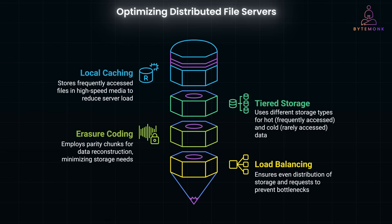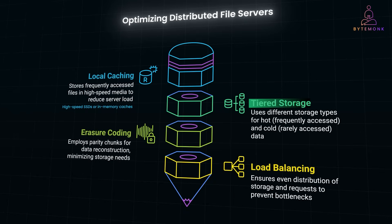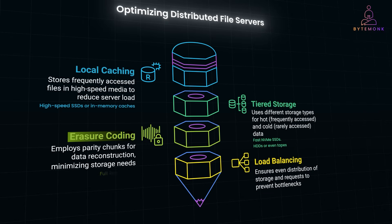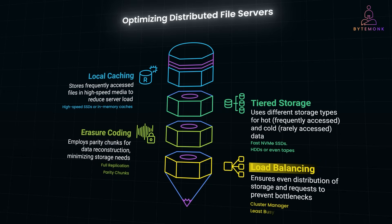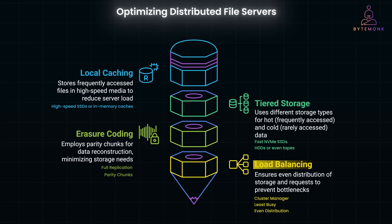Let's talk about optimization strategies to keep our storage system fast, efficient, and cost-effective. First, local caching: store frequently accessed files in high-speed SSDs or in-memory caches to reduce load on main file servers — for example, a frequently accessed video is cached so users don't fetch it from disk every time. Second, tiered storage: hot data goes on fast NVMe SSDs, while cold data is stored on HDDs or tapes — old backups move to low-cost archival storage after 30 days. Third, erasure coding: use parity chunks to reconstruct lost data while using less storage than full replication. Fourth, a cluster manager: dynamically assigns new files to the least busy server, preventing bottlenecks — if server A reaches 90% capacity, new files are automatically stored on server B.